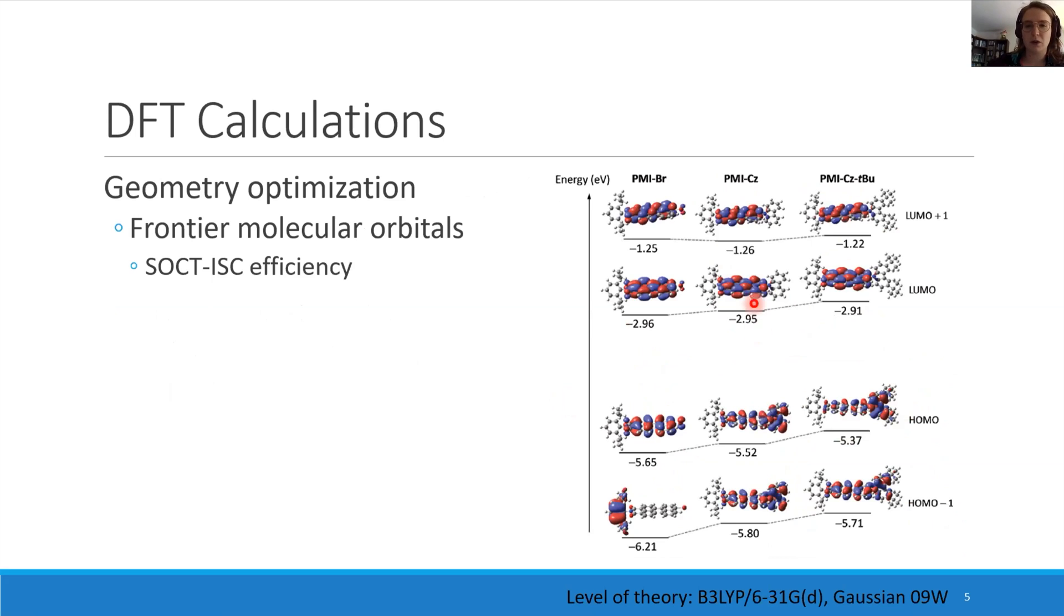There is an overlap between the HOMO and LUMO, which reduces the compensation of the molecular orbital angular momentum change, which will reduce the intersystem crossing and thus has an effect on the SOCT intersystem crossing efficiency. This can be used in a general way to study SOCT intersystem crossing in triplet photosensitizers.